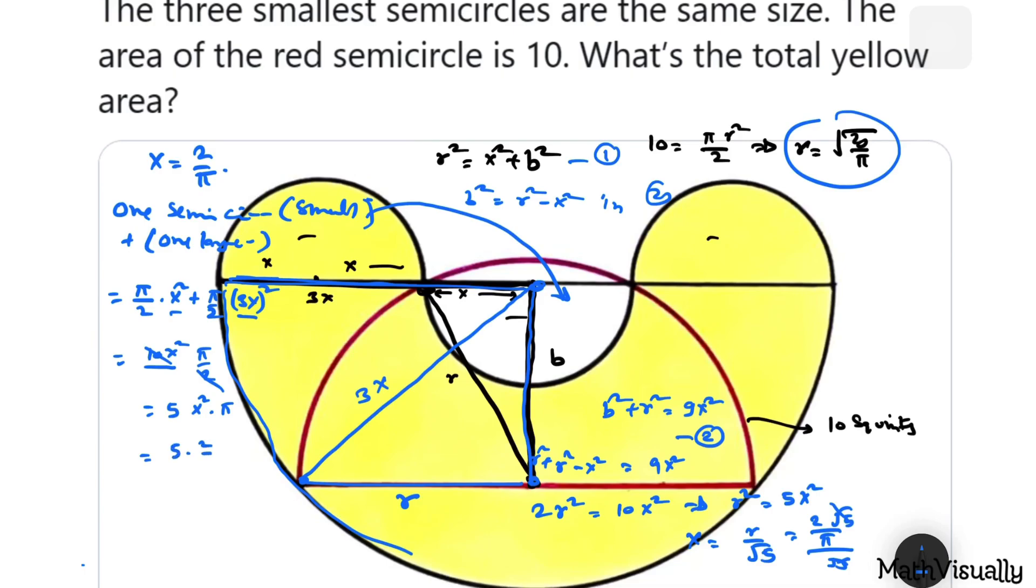As we know that x is 2/π, so 5 times (2/π)² multiplied by π. That is 5 multiplied by 4, which makes us 20.